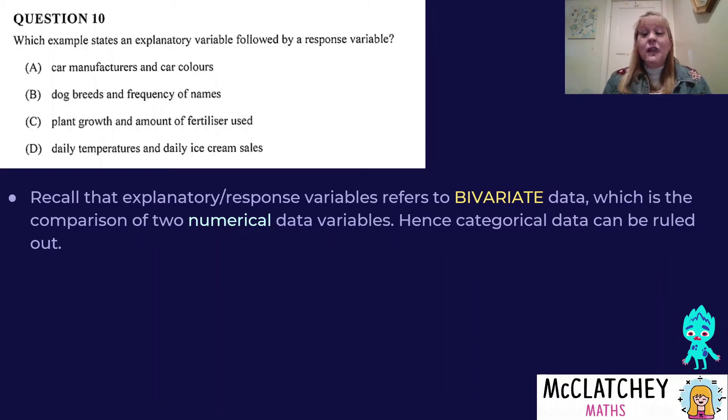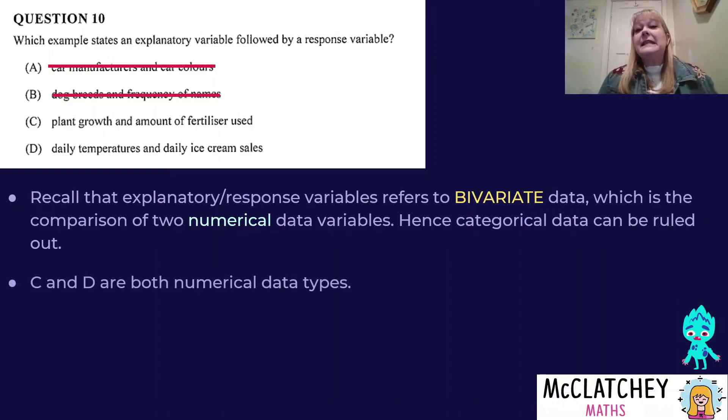Remember, categorical data is if I asked a survey question, I'd be given a word. Numerical data is I'd be given a number. Let's look at option A: car manufacturers, that would be things like Nissan, Toyota, Ford. Car colors: red, green, blue. They're all word answers, that means it's going to be eliminated. Dog breeds, that's things like Poodles, Doberman, Great Dane. Frequency of dog names: Scamp, Max, Charlie, also all words. Both of those are categorical data, which means C and D are our numerical data types, so both of them are bivariate data.